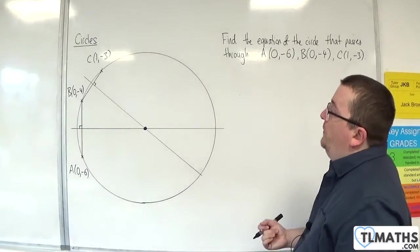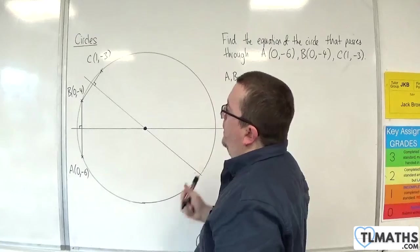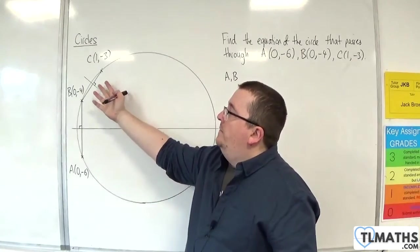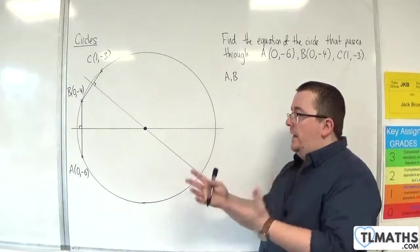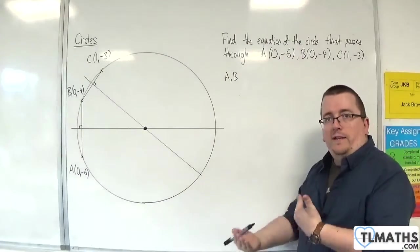So if you've got three points, pair them up. So I'm going to be working with A and B first of all. Work out the perpendicular bisector. Then pair up B and C, perpendicular bisector. Where those perpendicular bisectors intersect is the centre of the circle. And then I'm partway on my way to finding the equation.